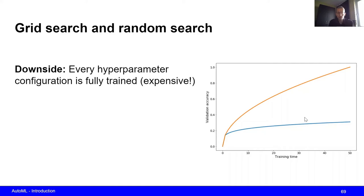Let's start by observing the problem of grid and random search. Recall that we evaluate all possible combinations of hyperparameters, or samples of hyperparameter configurations in case of random search, and what we basically do is we iteratively train them fully. So for example in case of neural networks, we just have some pre-specified number of epochs and we train every configuration for that number of epochs.